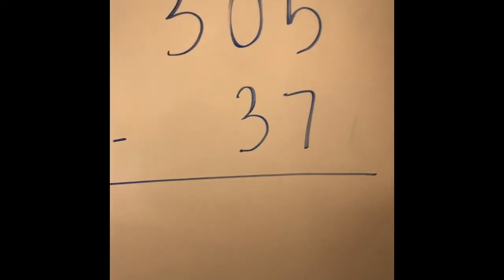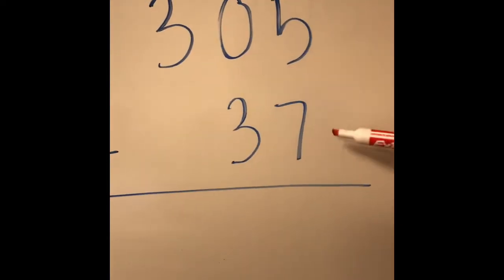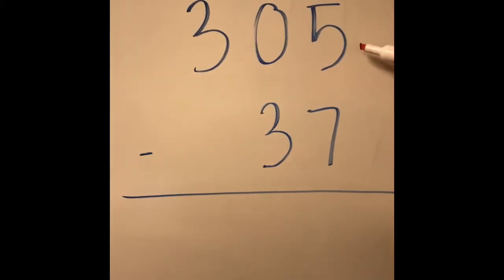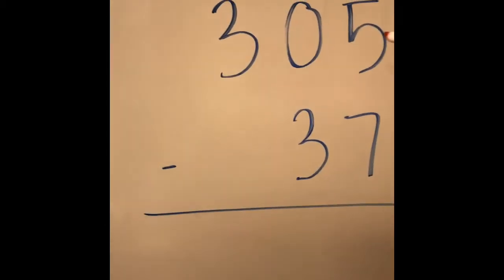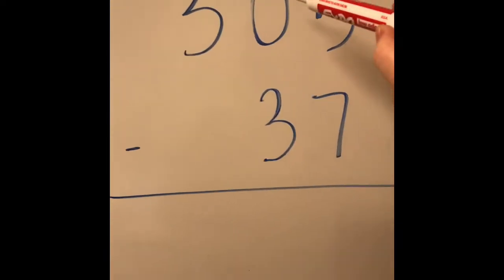In the ones place we have a 5 and a 7, and because 5 is less than 7, we need to borrow from the tens position, but there's a zero there.